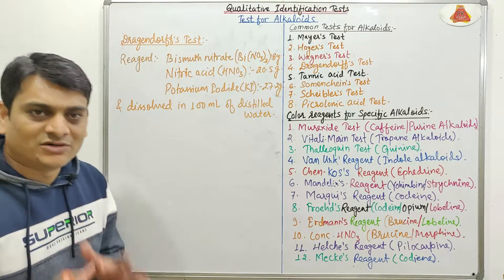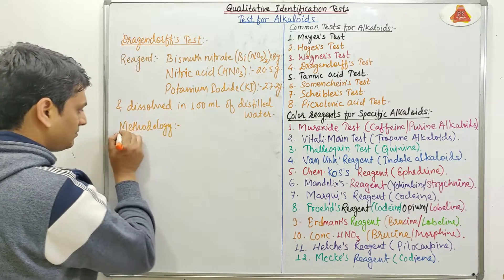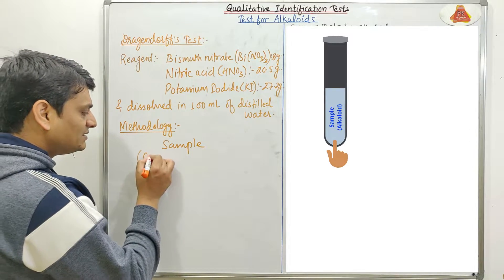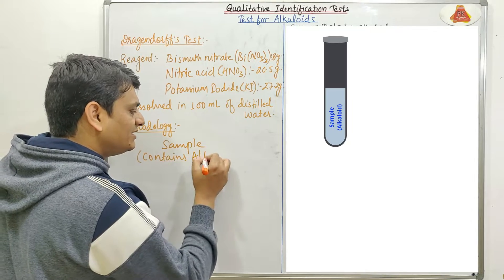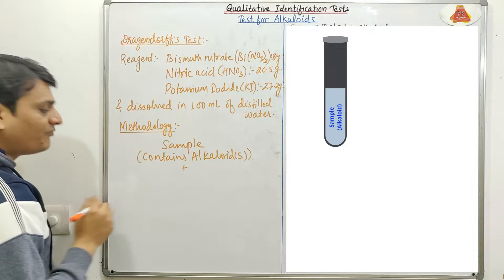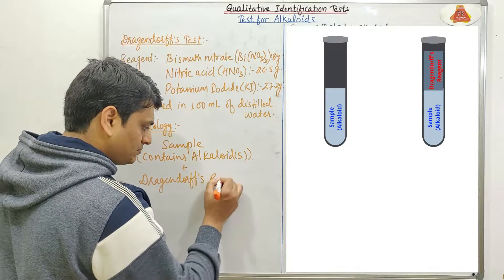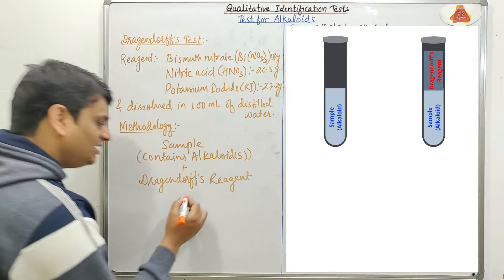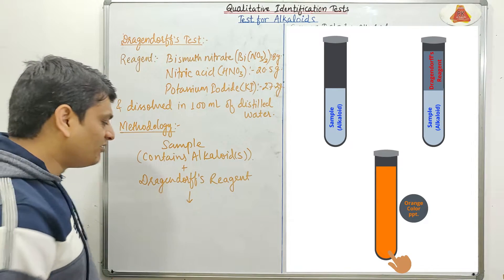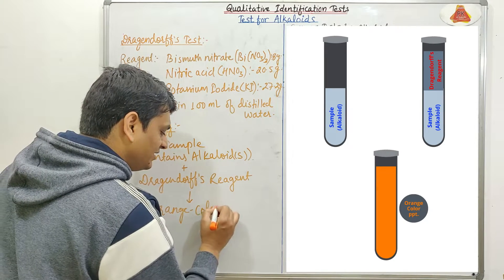Now coming to the methodology for this test. First I will take the sample which contains alkaloid or alkaloids. After that we will add the Dragendorff's reagent. After addition of the reagent, if we are getting an orange color precipitate, it means alkaloid is present. We will get an orange colored precipitate.